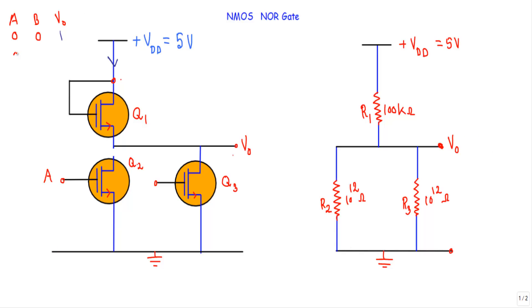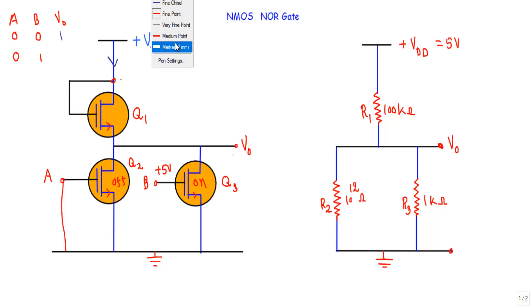Case 2: A = 0, B = 1. Terminal A is connected to ground and +5 V is applied to terminal B. Therefore Q2 is in the OFF state and Q3 is in the ON state. The OFF-state resistance of Q2 is 10^12 ohms, and the ON-state resistance of Q3 is 1 kΩ. Since Q2 is OFF, its source and drain act as an open circuit and can be disconnected from the network.